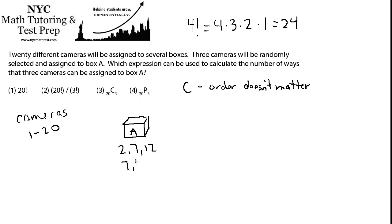It could have been seven, and two, and twelve, or twelve, and two, and seven. Those are all the same thing in terms of combinations. You've got the same three cameras. So, it doesn't matter.